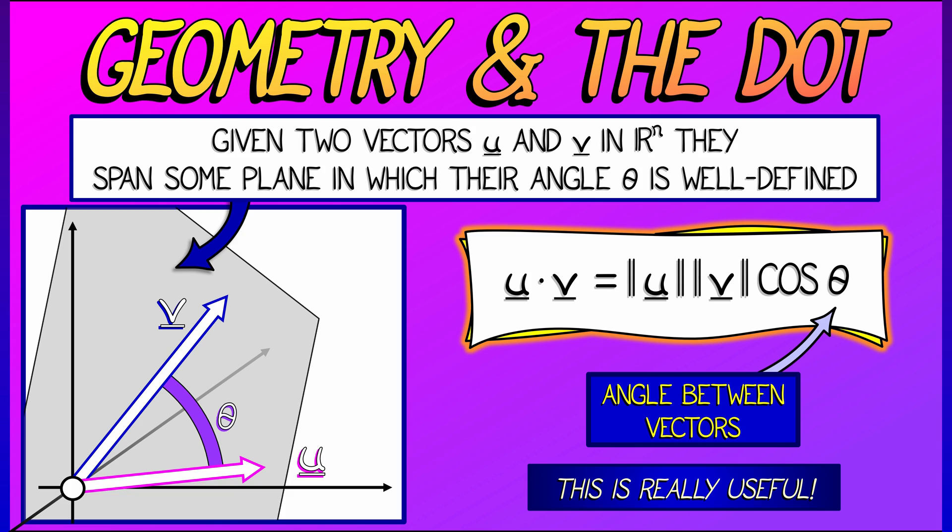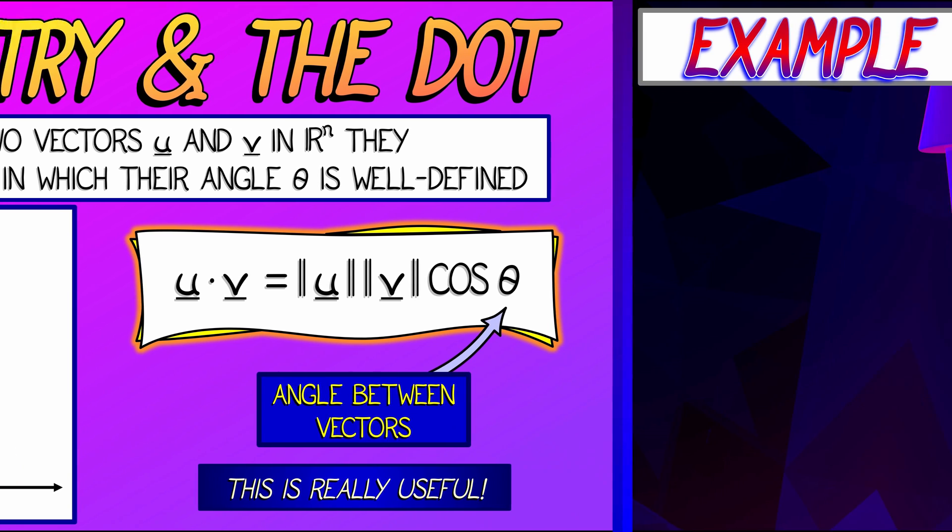U dot v is the length of u times the length of v times the cosine of that angle theta. This is so important to us, you are definitely going to want to memorize that formula.